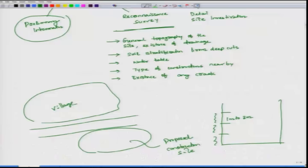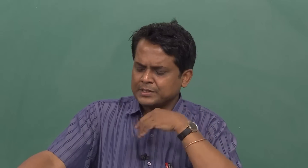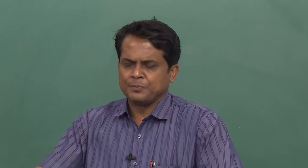Suppose from 0 to 2 meters the soil looks brown, and from 2 to 4 meters the soil looks grey. If you rub a pinch of soil here, you find it is sticky - indicating clay. From another layer, if you rub it, you can observe sand particles. This gives an indication of whether the soil stratification is varying along the depth or the same soil is present throughout.